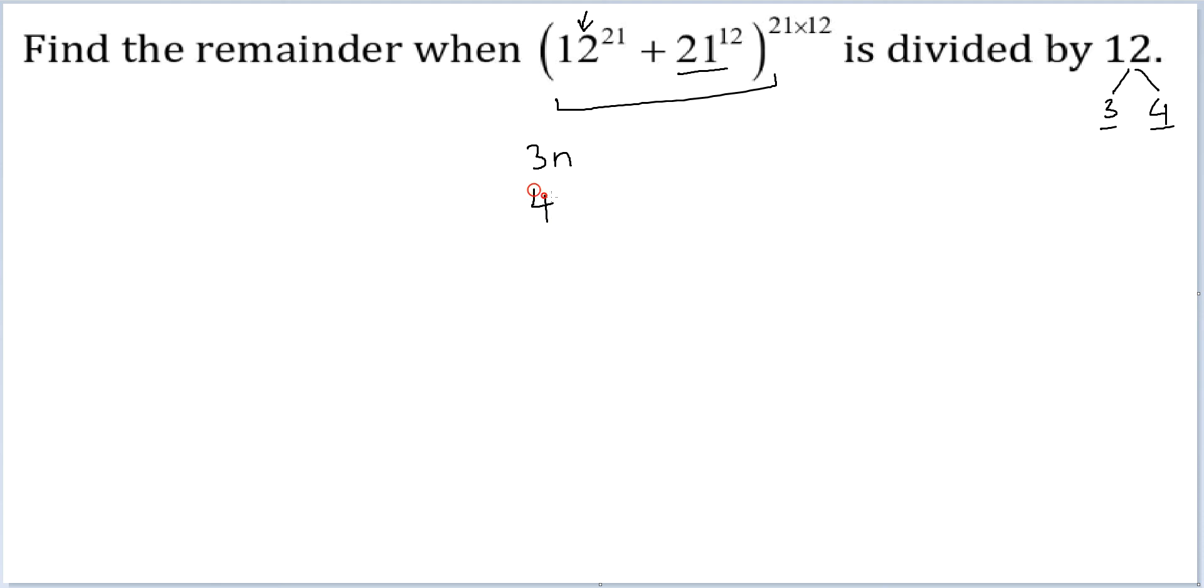So the final remainder that you get is 4k plus 1. So finally, the number that you are seeking is a multiple of 3 and a number that leaves remainder 1 with 4. Or the number itself is 12n plus 9.